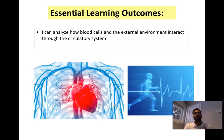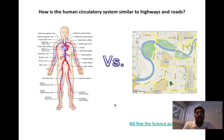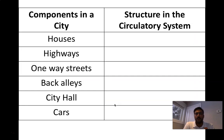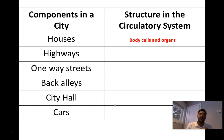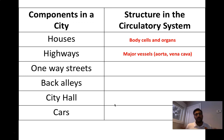We're going to focus today on how blood cells and the external environment interact through the circulatory system. I want you to think about the circulatory system similar to a series of highways and networks. If we were to compare it, houses would be like the body cells and organs — the things you live in and need to leave and return to throughout your day. To leave that place, you might take a highway: major roads with lots of cars.